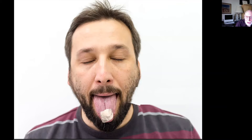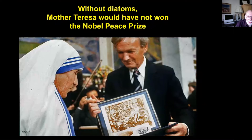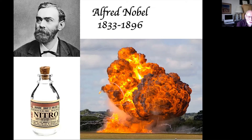This absorbent quality makes diatomite a very useful product: kitty litter, swimming pool filters, a bed bug killer. But without diatoms, Mother Teresa very likely would not have won the Nobel Peace Prize. In the mid-1800s, Swedish chemist Alfred Nobel was trying to find a stable explosive. He mixed unstable liquid nitroglycerin with all sorts of things and nothing worked until he tried it with diatomaceous earth. When he mixed it with diatomite, it worked — he called the product dynamite, and it was the basis of his fortune. No diatoms, no diatomite; no diatomite, no dynamite; no dynamite, probably no Nobel fortune or Nobel Prize.